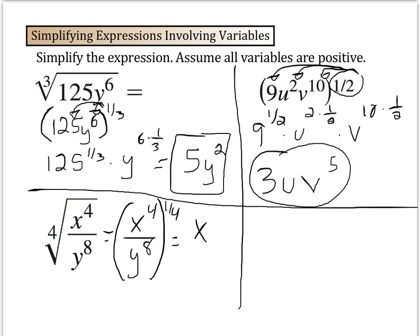We have x to the 4 times 1 4th over y to the 8th times 1 4th. And we're going to have space here, but let's write the answer down here. The x to the 4th times 1 4th would just be x. And the y to the 8th times 1 4th would just be y squared. So there's our answer.